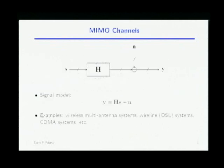Let me start with the signal model. It's a signal model that we all know. This is a MIMO channel. We know that MIMO channels arise in many different physical scenarios — wireless multi-antenna, DSL, CDMA systems. And we can always write the system model like this. H is the channel, it's a matrix. S is the vector that we transmit. Y is the signal that we receive, and then there's the noise.